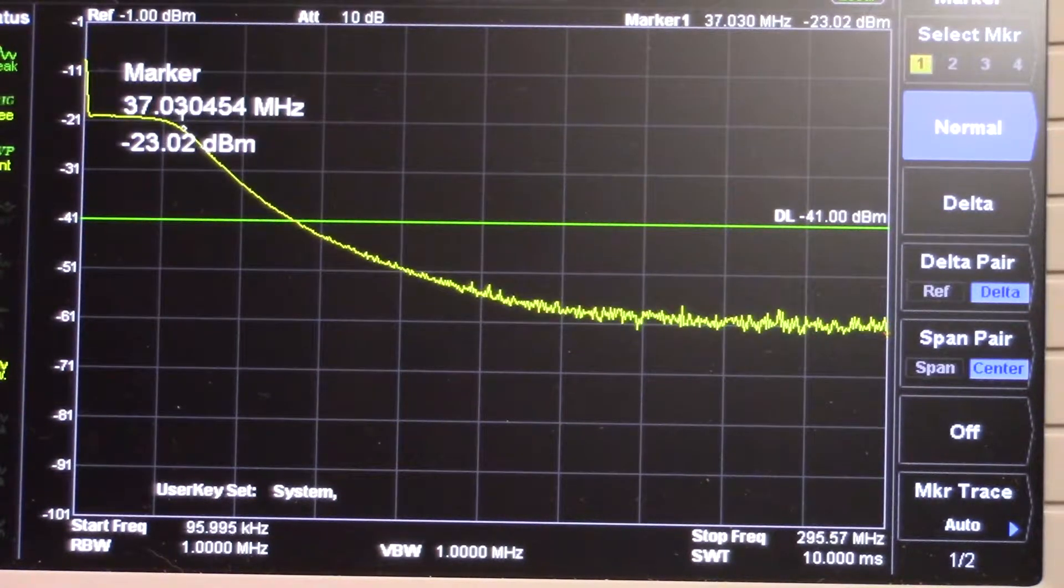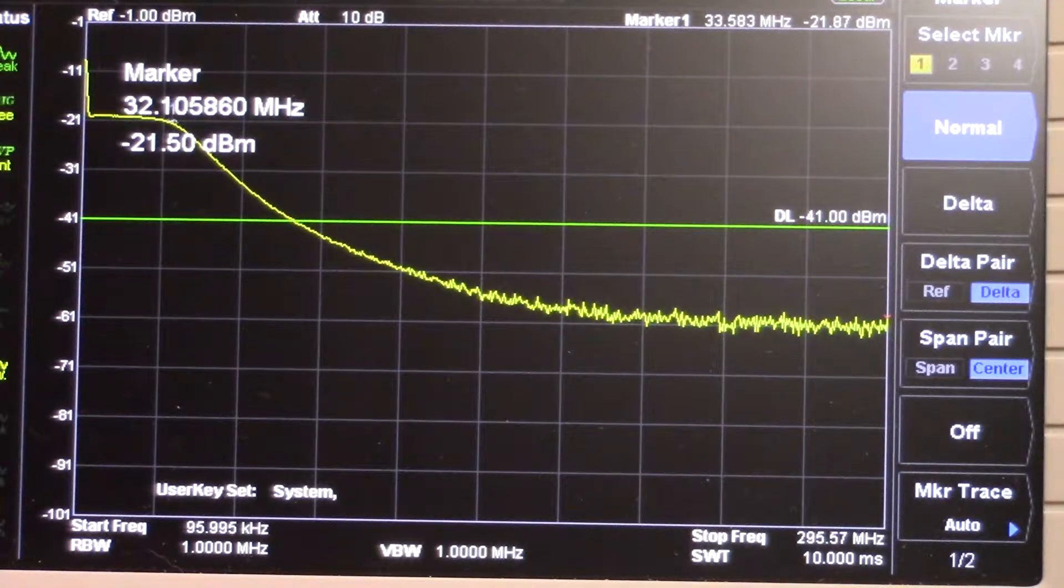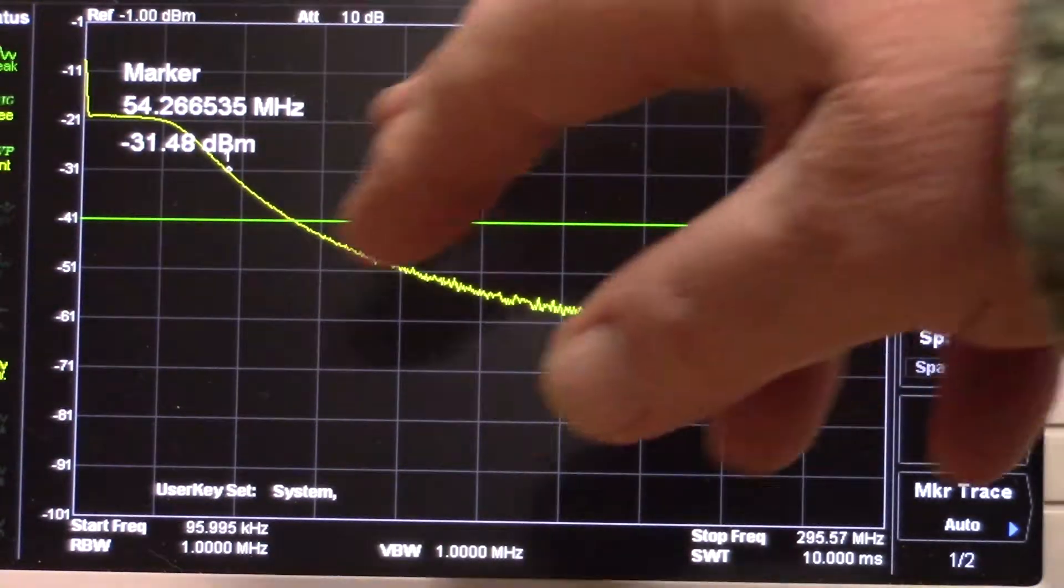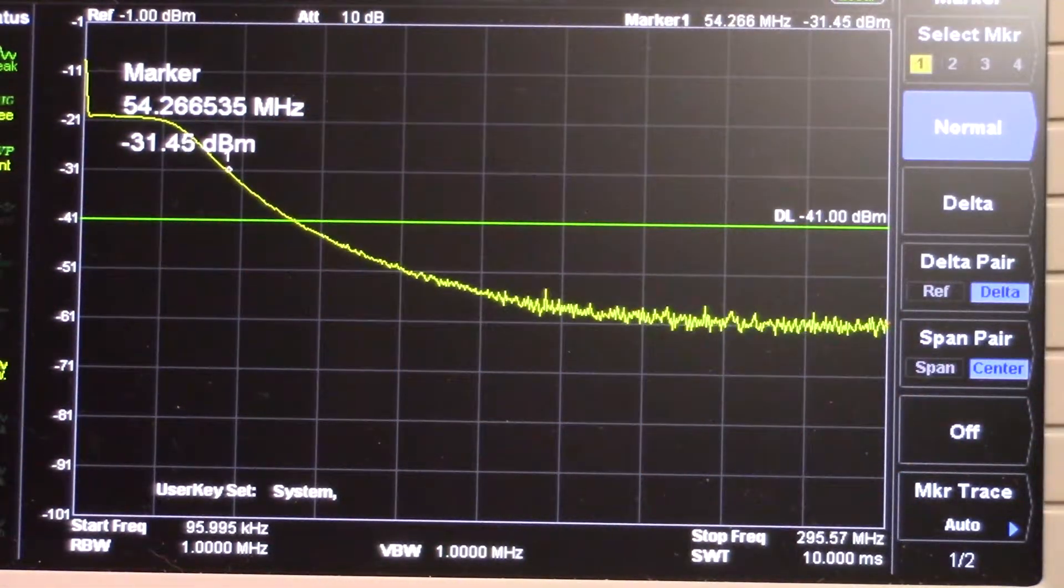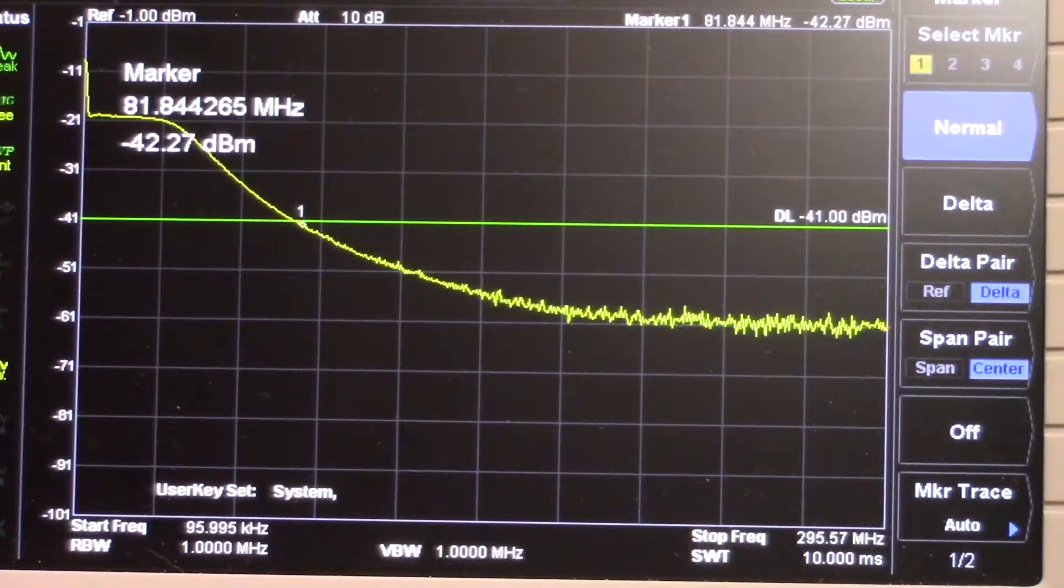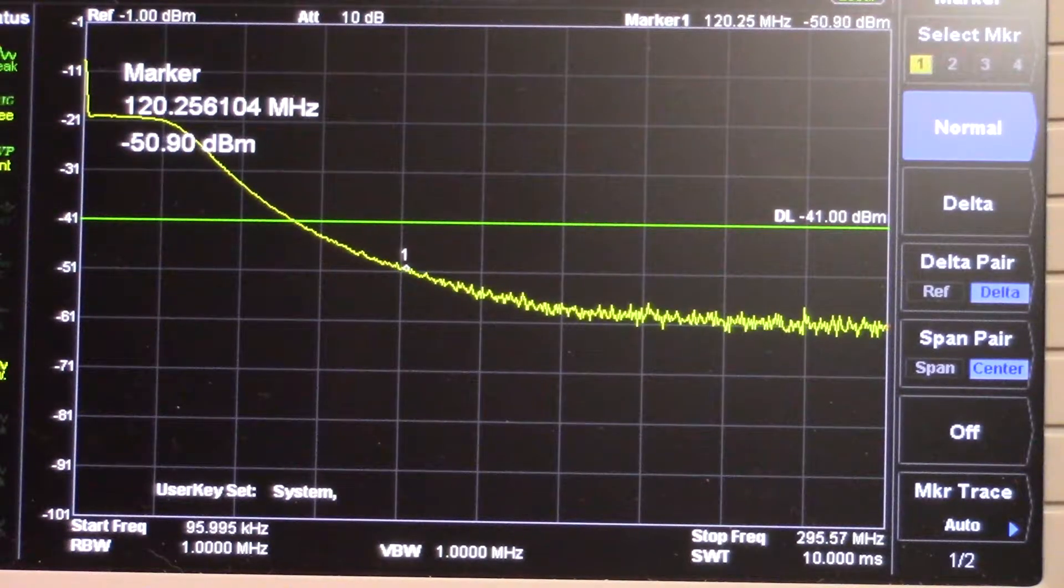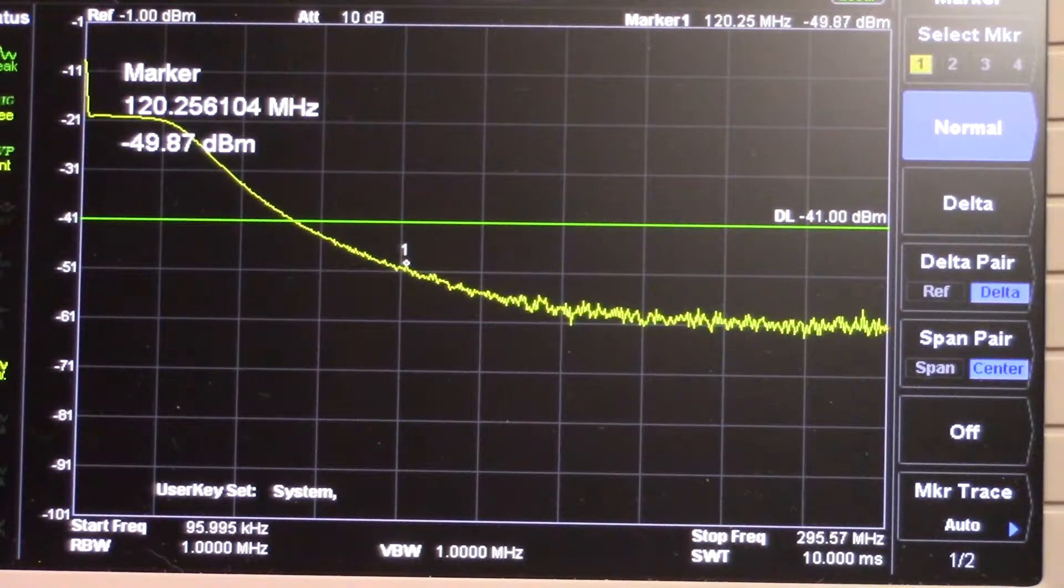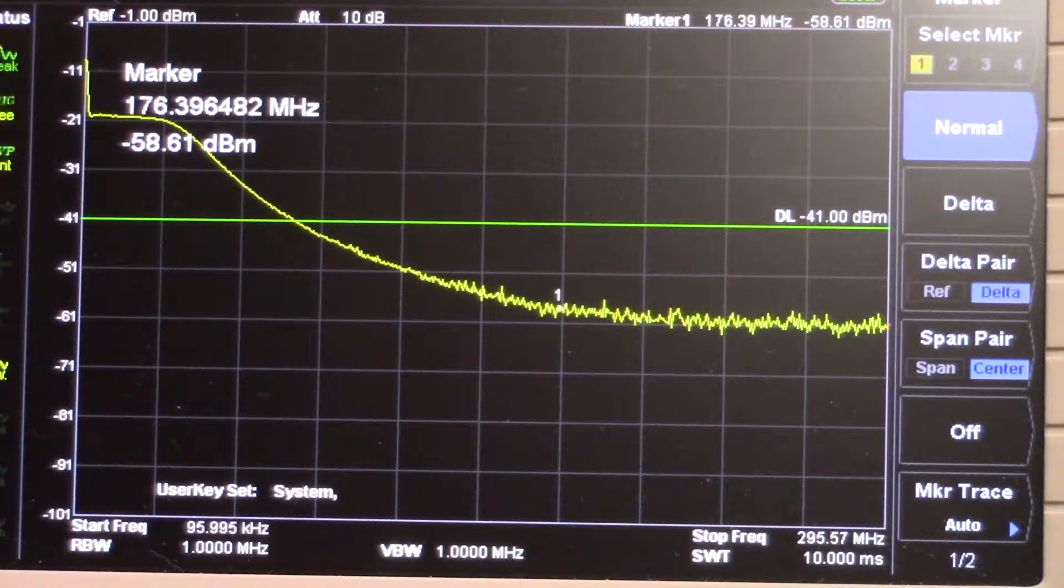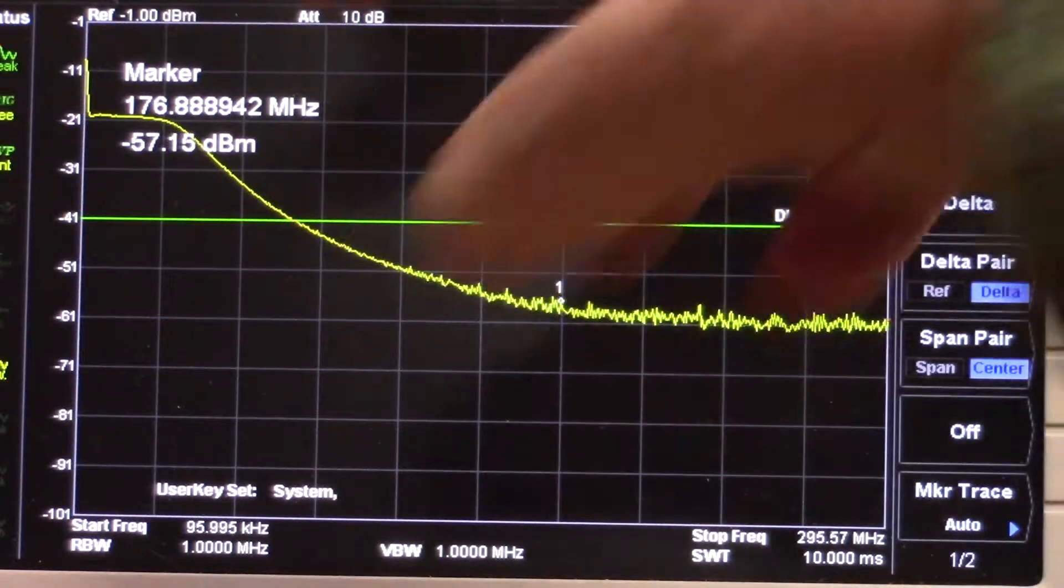And starting at around 30, call it 31.6, we drop down. Each block is 10 dB. So there's minus 10 dB, there's 20 dB down. So 35, all the way to 40. So 40 dBm of roll off on that filter.